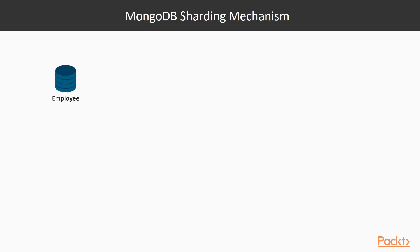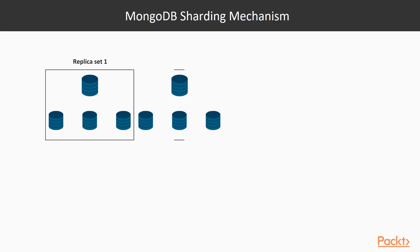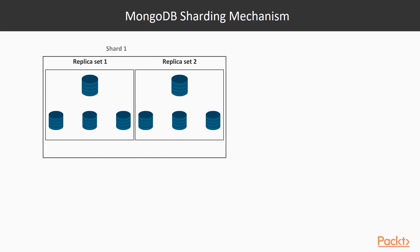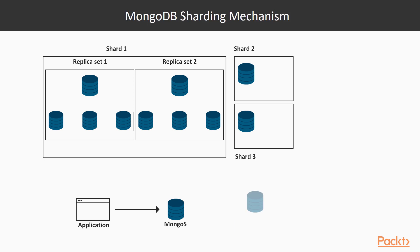Let's say I have an employee database which has records from employee ID 1 to employee ID 100. I have two replica sets which I group up and call as shard 1, another replica set which I call shard 2, and another single MongoDB instance which I call shard 3. Then there's a server called mongos which would be the single point of contact for all my application servers. There is also something called config servers which would be assisting your mongos for the listings in the shard servers.